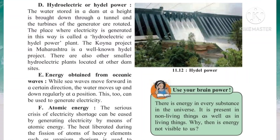The next energy resource is energy obtained from oceanic waves. Just as with tidal energy, by using waves they can generate electricity. While sea waves move forward in a certain direction, the water moves up and down regularly at a position. These two motions can be used to generate electricity, similar to tidal energy, by using turbines driven by oceanic waves.